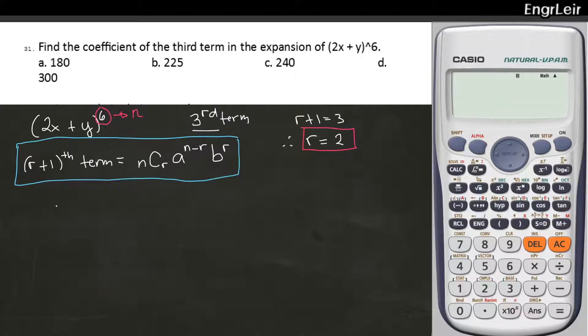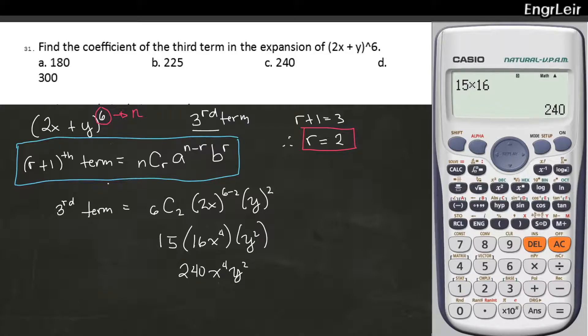Now, substituting everything dito, yung third term mo is equal to 6 combination 2, 2x raised to 6 minus 2, y squared. Okay? Using our calculator, 6 combination 2 is equal to 15. 2 raised to 4 is 16. Then x raised to 4. Then we have y squared. 15 times 16 is 240. So 240 x raised to 4, y squared. Ito yung third term natin. But we are only interested in the coefficient. So the answer is 240.